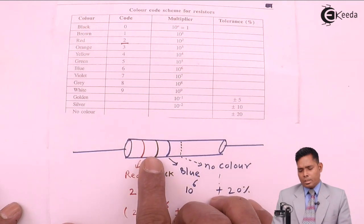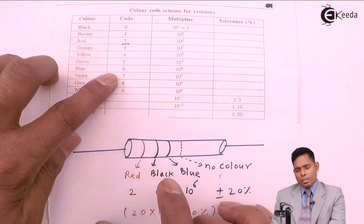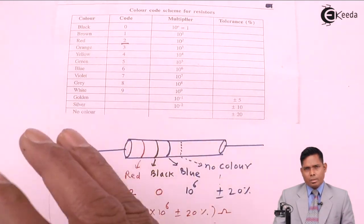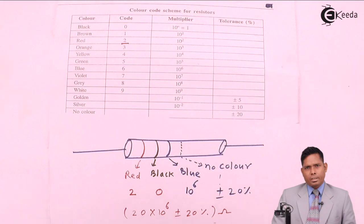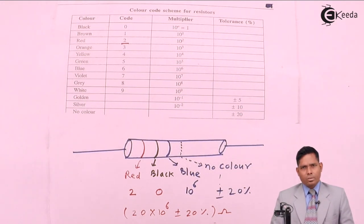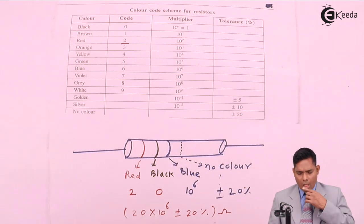So let me repeat - the first two colors represent the number, the third color is a multiplier. So the first two digits that you get from here is multiplied with 10 power of this. The last one is tolerance. This is the color code.